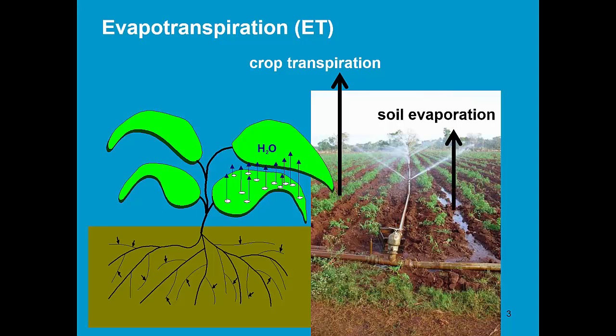Water which is on the soil or at the top soil can also be lost by soil evaporation. Now in the field, those processes are difficult to distinguish, hence they are considered together and called evapotranspiration.